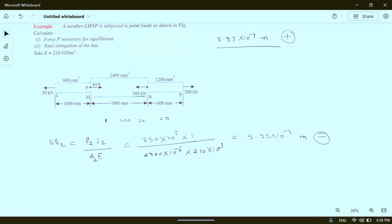Third part delta L3 - it is compressive force, that's why it is negative. P3 is 200 kilonewtons, so 200 times 10 to the power 3 times L3 divided by A3 times E. If you calculate this, you will get delta L3 equals 4.76 times 10 to the power minus 4 meters, which is plus because it is under tension.